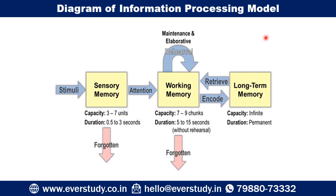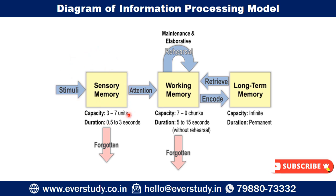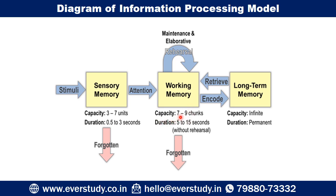With the help of this diagram we can understand the Information Processing Model better. Stimuli enter first into sensory memory, which has a capacity of 3 to 7 units and a duration of 0.5 to 3 seconds for what we see, and 3 to 5 seconds for what we hear. After giving attention to sensory memory, information shifts to working memory, which can hold 7 to 9 chunks — this was Miller's concept.